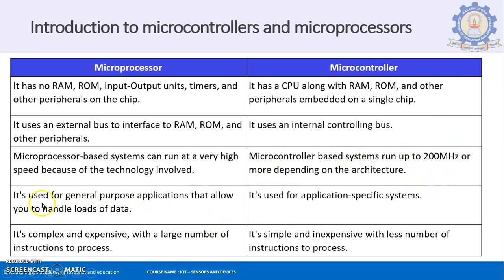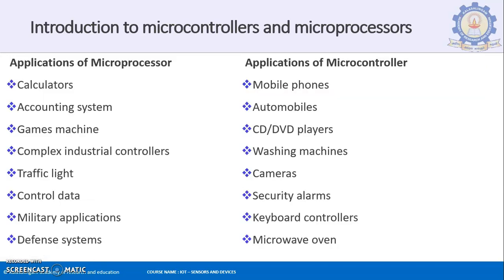A microprocessor is good for general purpose applications that allow you to handle loads of data — it is generic in purpose. Whereas a microcontroller is specific in purpose, so for any specific application you go for a microcontroller. If you are not specific and want to do any task, you go for a microprocessor. A microprocessor is complex and expensive with a large number of instructions because it can do many tasks. A microcontroller is simpler and less expensive with fewer instructions, since it is built for dedicated purposes — that is its advantage.